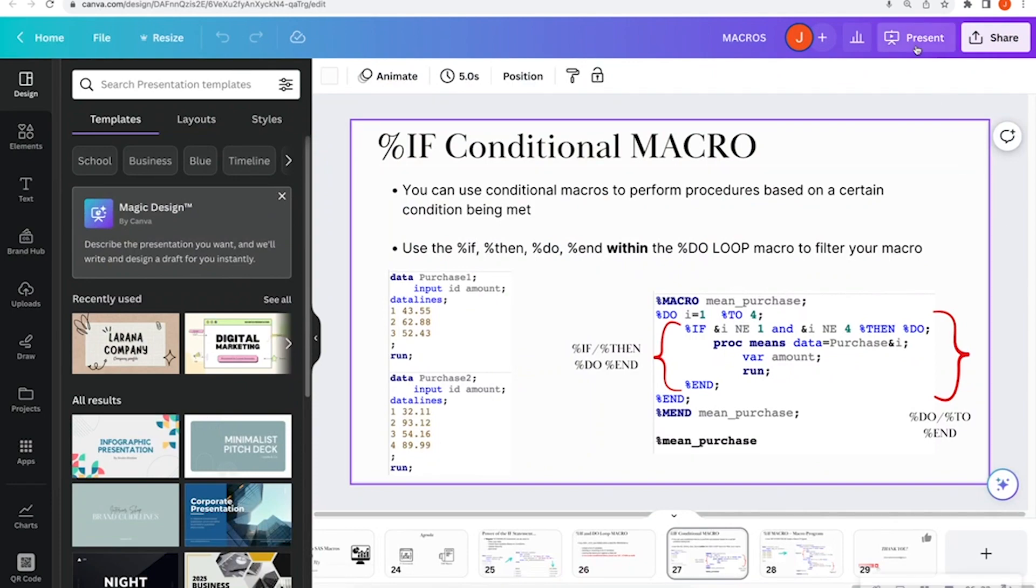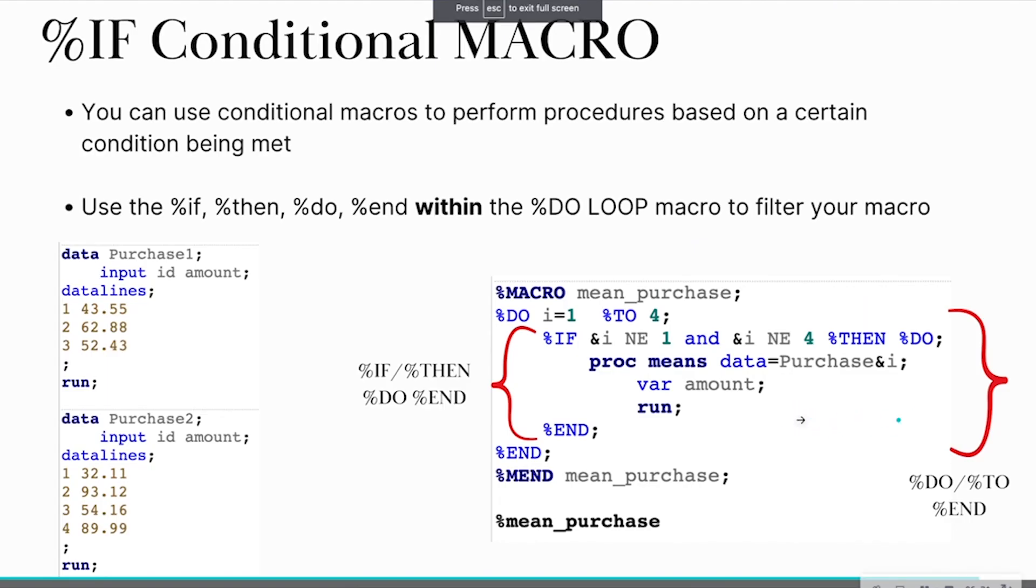And this gives me the mean of the purchase amount, the standard deviations of the purchases that were made, and the minimum and maximum. So this is an example about how to use our percent if macro inside of a do loop. All right, so let's go ahead and keep going.